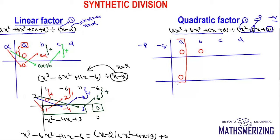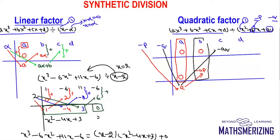Adding the first column gives a. I multiply a with −p and put the result in the next row, giving −ap. I multiply a with −q and put it further along, giving −aq. Adding again gives b − ap and c − aq. Then I multiply −p and −q with the new row values and place the results, adding again. This is how we perform synthetic division for quadratic factors.